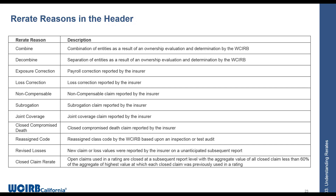'Joint coverage claim' — the first time a claim is reported as a joint coverage claim by the insurer on a unit statistical report — facilitates amending the experience modification. 'Closed compromised death' is a death claim closed and compromised solely over whether the injured worker was due benefits within the workers' compensation system. 'Reassigned class codes' is where we've reassigned classifications originally reported by the insurer on the USR as a result of an inspection or test audit. 'Revised losses' are situations where new claims or loss values were reported by the insurer on an unanticipated subsequent report.